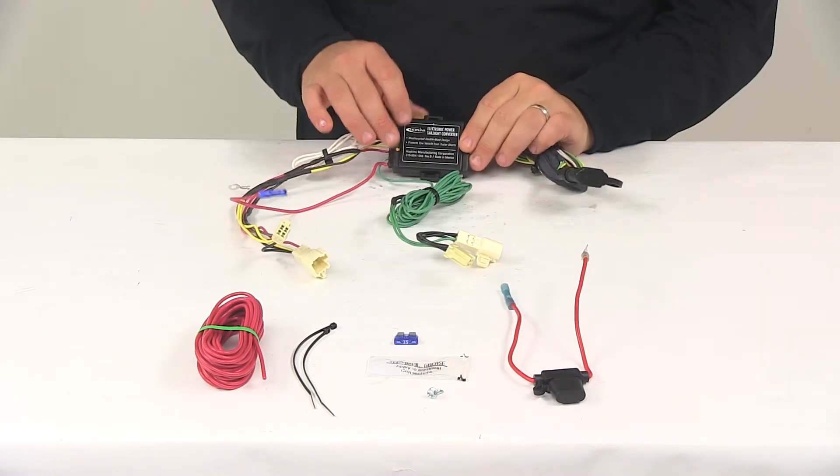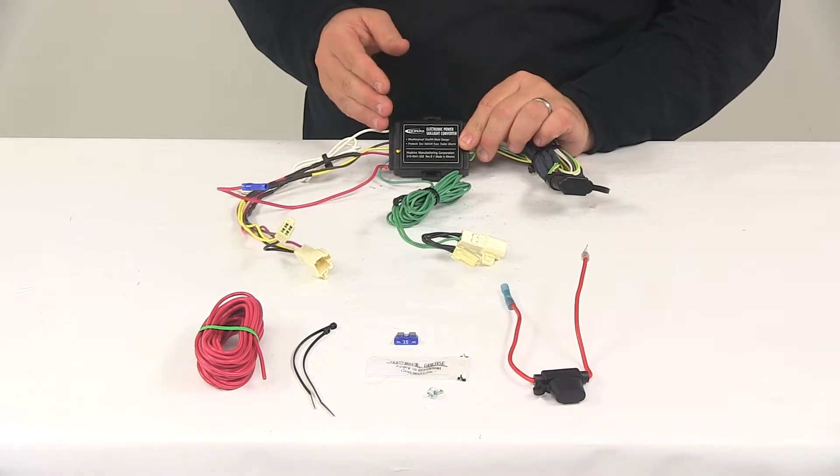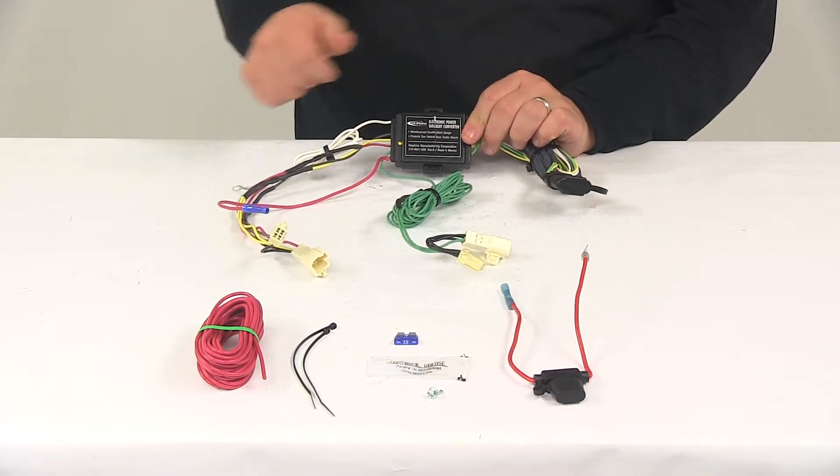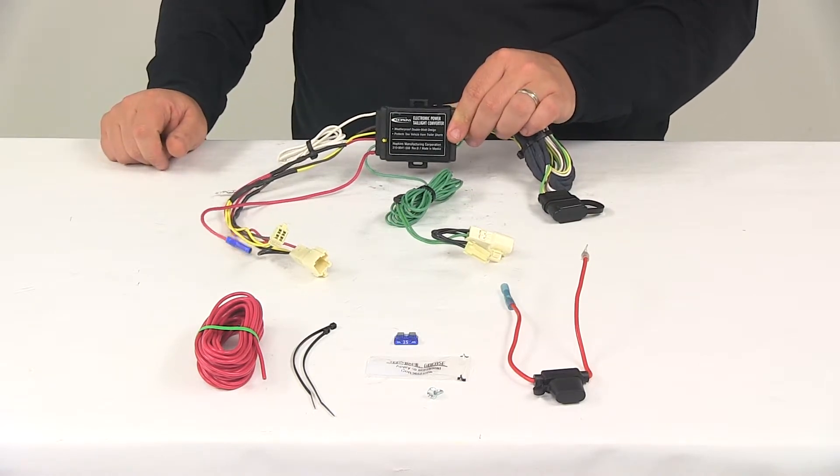Then you'll need to mount the converter box. You can get this mounted to a suitable location using the included cable ties. There's a couple areas right here, one on each side that you can easily use to get it mounted.